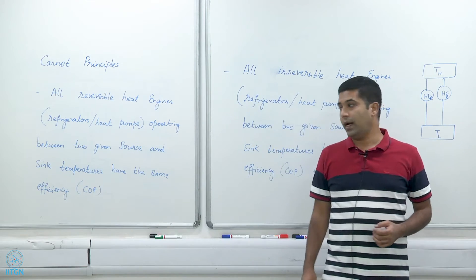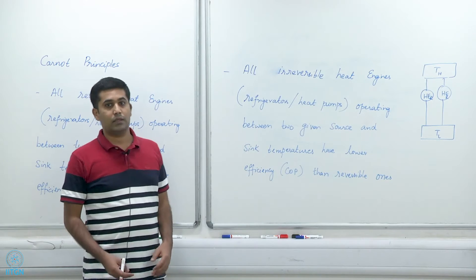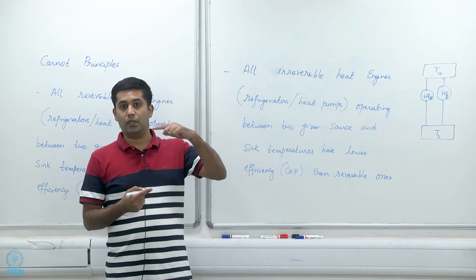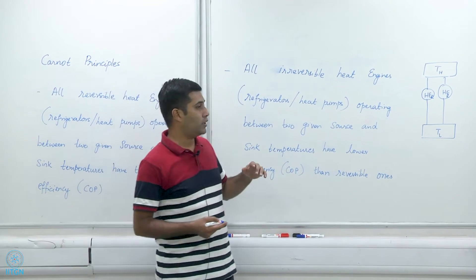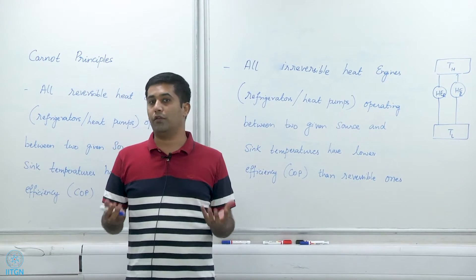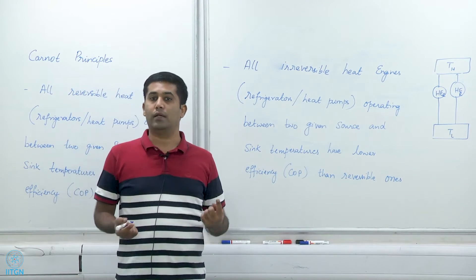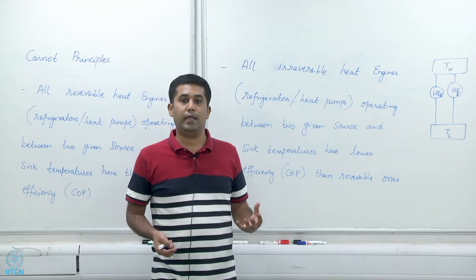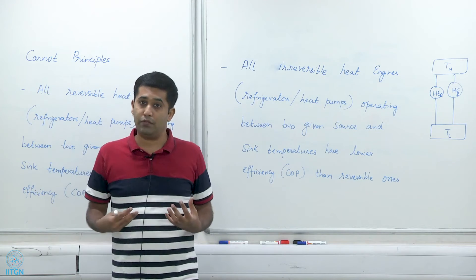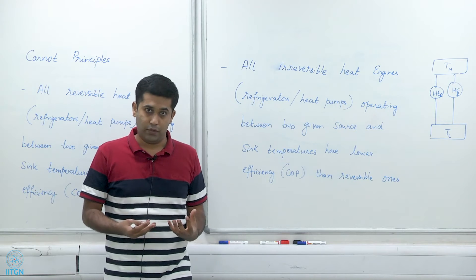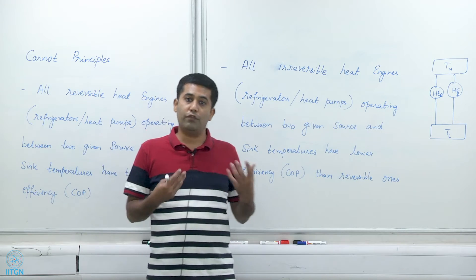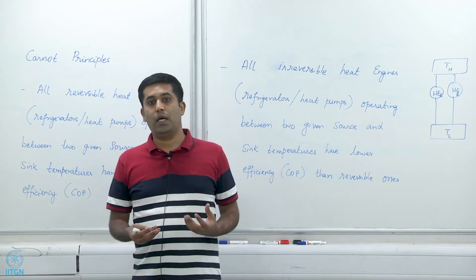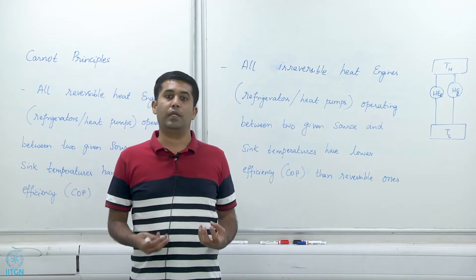The second principle says that reversible heat engines are always more efficient than irreversible ones operating between the same temperature reservoirs. It is important to compare engines or refrigerators that operate between the same temperature limits. Once we fix T_H and T_L, all reversible heat engines have the same efficiency, all reversible refrigerators or heat pumps have the same COP, and all irreversible refrigerators or heat pumps have COP values lower than reversible ones.